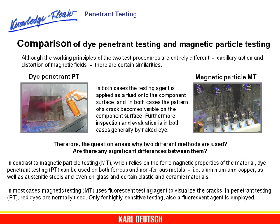Comparison of dye penetrant testing and magnetic particle testing. Although the working principles of the two test procedures are entirely different — capillary action and distortion of magnetic fields — there are certain similarities. In both cases, the testing agent is applied as a fluid onto the component surface, and in both cases the pattern of a crack becomes visible on the component surface. Furthermore, inspection and evaluation is in both cases generally by naked eye. Therefore, the question arises: why two different methods are used? Are there any significant differences between them?